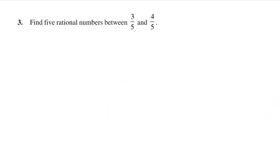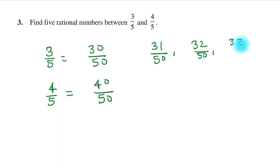Coming to the third question: Find five rational numbers between 3/5 and 4/5. You can write 3/5 as 30/50 and 4/5 as 40/50. Between these two, we need to find five rational numbers. This is easy. You can write: 31/50, 32/50, 33/50, 34/50, and 35/50. These are all rational numbers that lie between these two fractions.